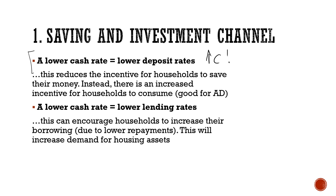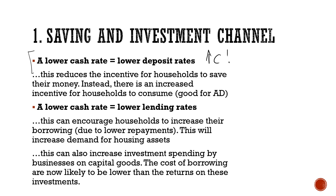A lower cash rate also means lower lending rates, so households will actually borrow more because it's cheaper. This will increase their demand for housing assets and could increase economic growth. Lower lending rates are also good for businesses because it's cheaper for them to borrow — if they borrow to buy capital goods, they're likely to make more money from those capital goods than it costs to repay that debt. This is the savings and investment channel, our first part of the transmission mechanism.